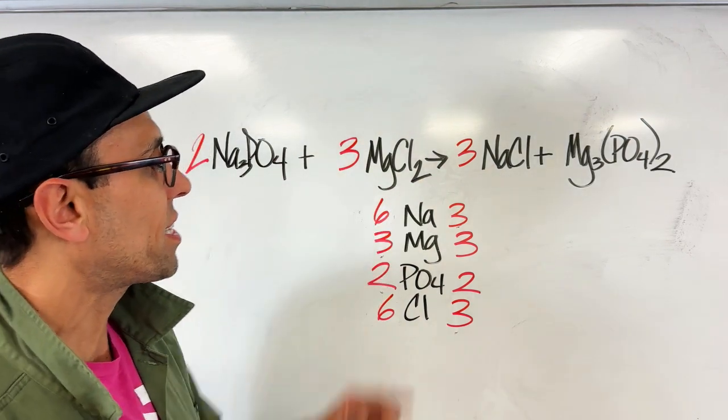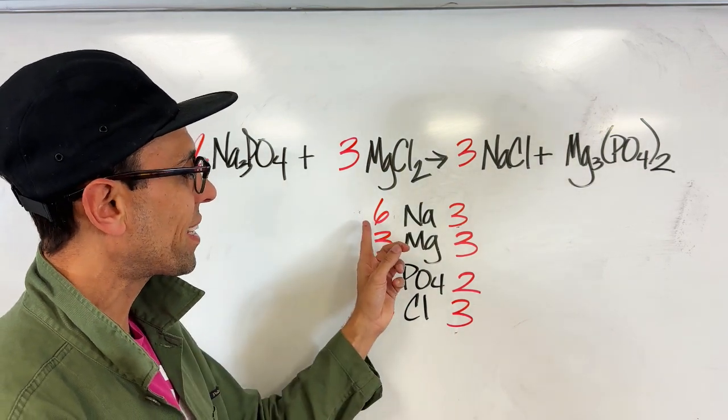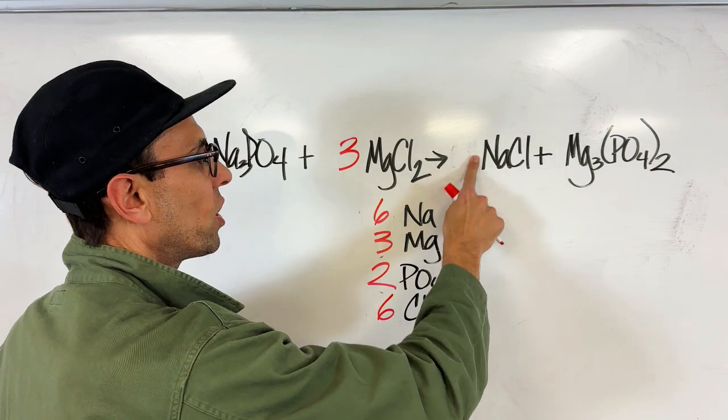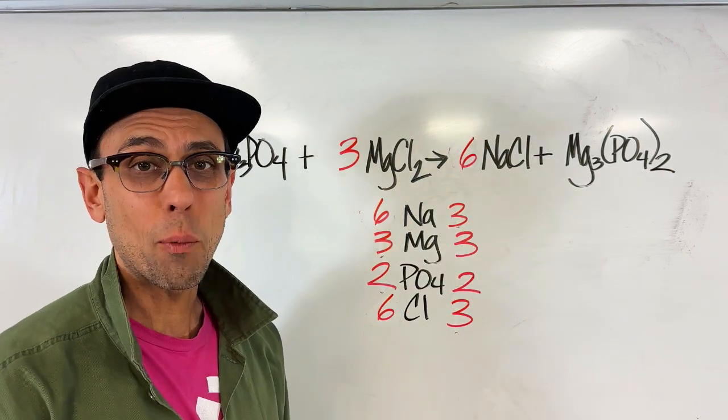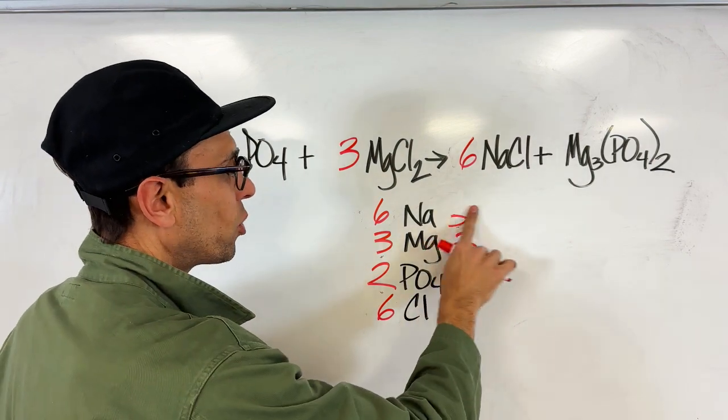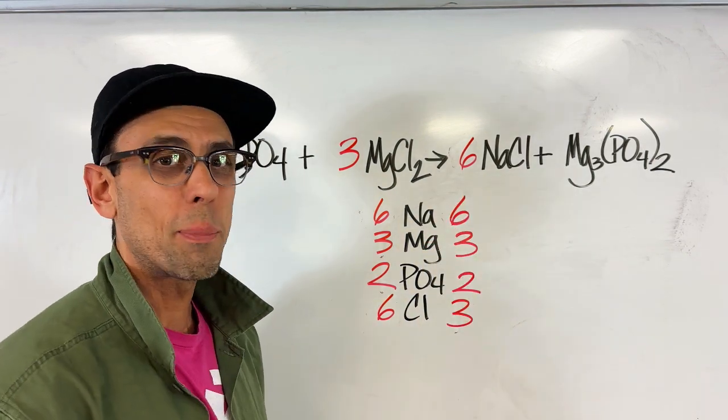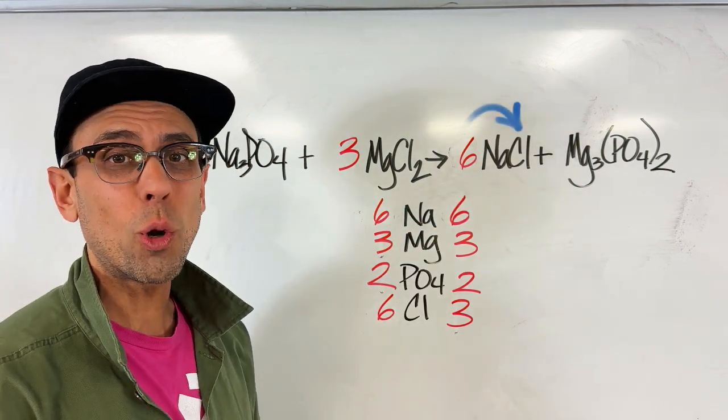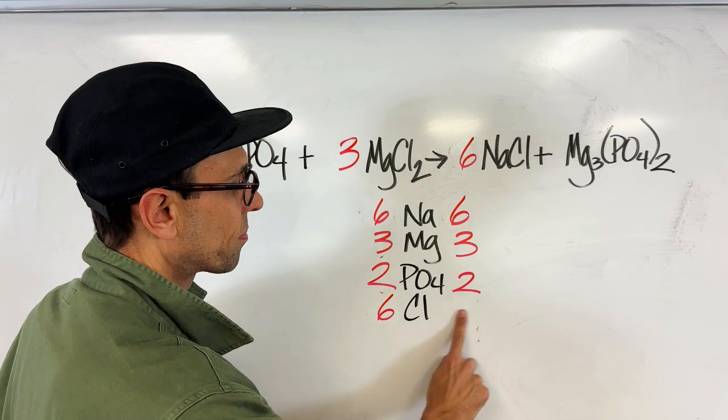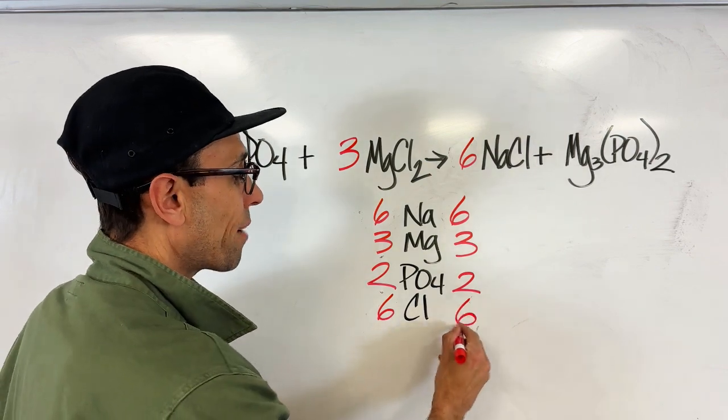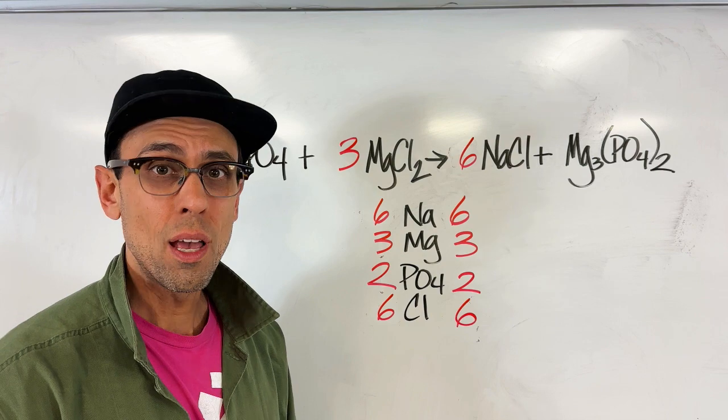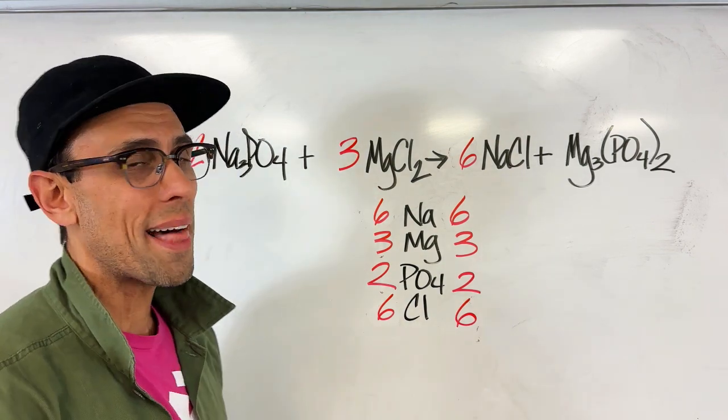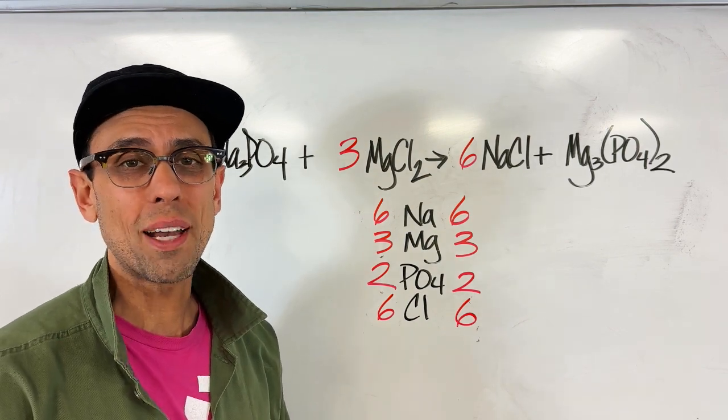So now we can go back over to this side, and in order to make the six sodiums on the reactant side equal to the product side, we can erase our original coefficient of three and replace that with a six. Now in doing that, we fixed our issue with sodium, but do you see what else happened? We've also now upped the number of chlorine on the product side to six as well. So we never even really had to focus on the nonmetal chlorine. By following the Minho sequence, we balance the nonmetal just by balancing the metals and the polyatomic ions first.